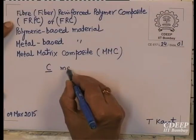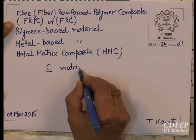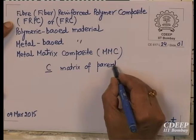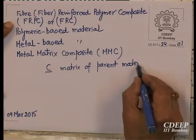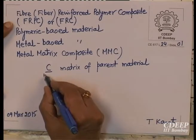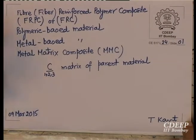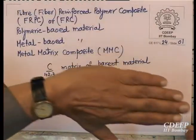You can deal with both metal matrix composite and polymer-based matrix material. Regarding transformation, I have given you the transformation rule. You have to deal with the C matrix of the parent material — C matrix with reference to 1, 2 and 3 principal directions of the orthotropic material — and those are transformed with reference to x, y and z.